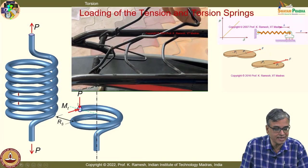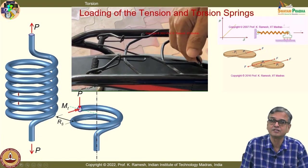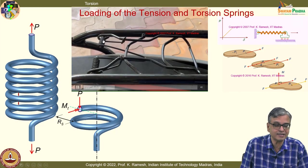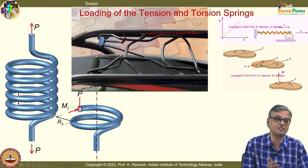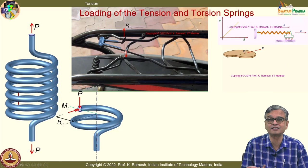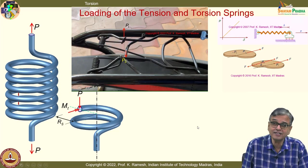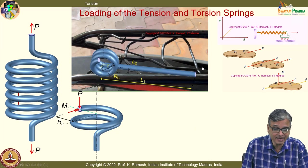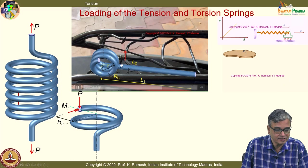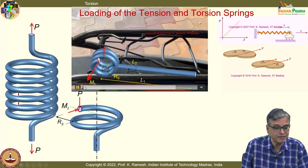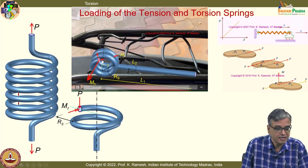Then we moved on to how to analyze a torsional spring. The torsional spring's major force is actually bending. There is a force here — I move this force and get a force plus a couple; that couple is a bending moment. When I move from this point to another, I have a force plus a couple — this is a twisting moment.